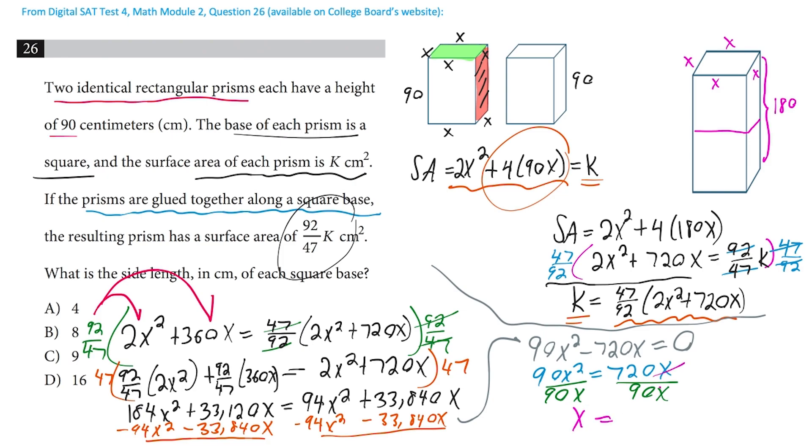And here, the x's are canceling. And we get an 8 right there. And what is that 8? That's the side length of each square base. It's this thing that we started with. And that's why the answer to this very complicated question is b. Thanks and have a great day.